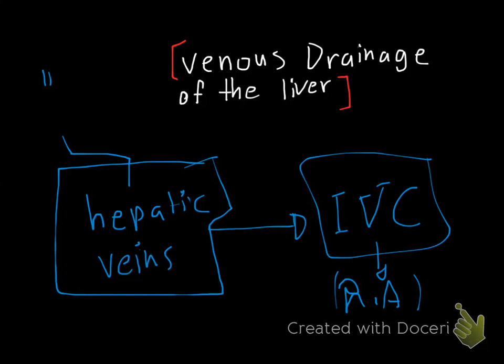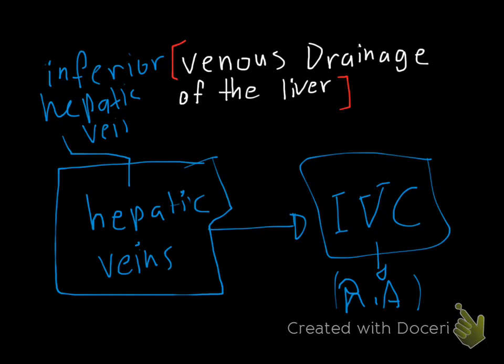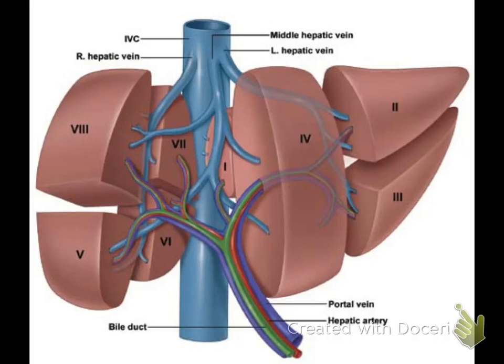The hepatic veins that drain into the inferior vena cava come in two types: inferior hepatic veins and major hepatic veins. The inferior hepatic veins are small, tiny veins that pass directly from the liver to the anterior wall of the inferior vena cava.